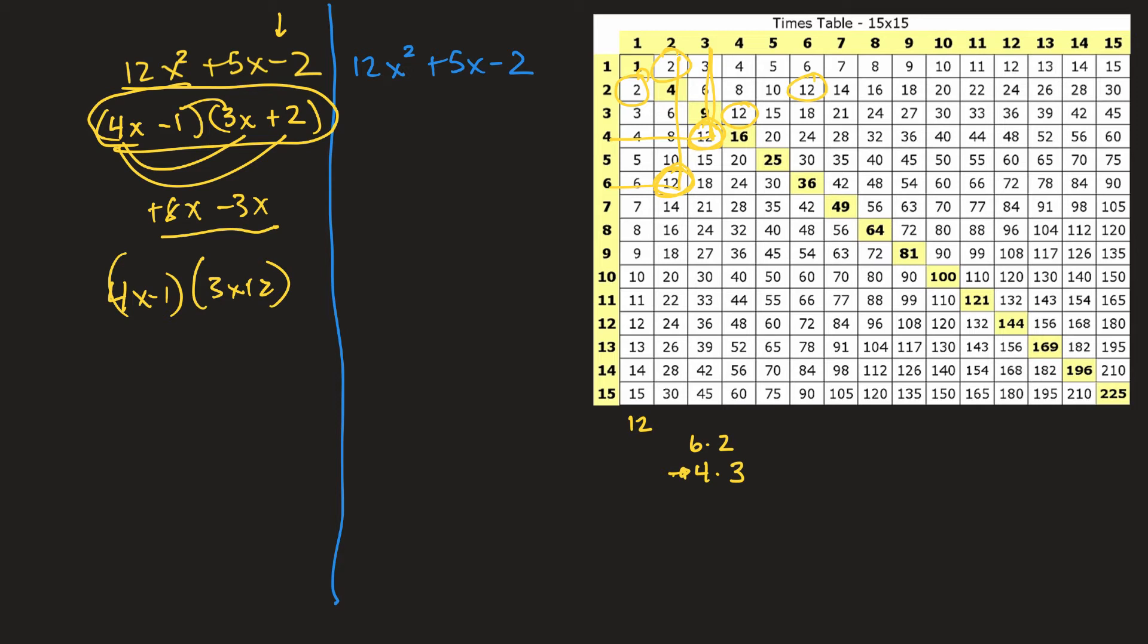To factor this with the AC method, if you're using the AC method, you have to do something slightly different. So what you do is you multiply this first term, which we call A, by this last term, which we call C. So 12 times negative 2 is a negative 24. Now I look that 24 up up here. There's a 24. There's a 24. There's 1. There's 1. Are there any more? Oh, there's 1. There's 1. So 4 times 6. 8 times 3.